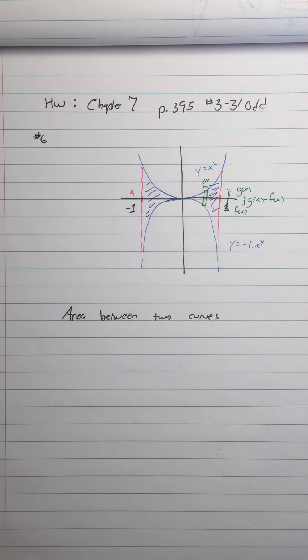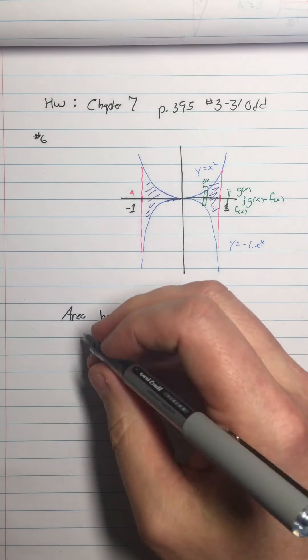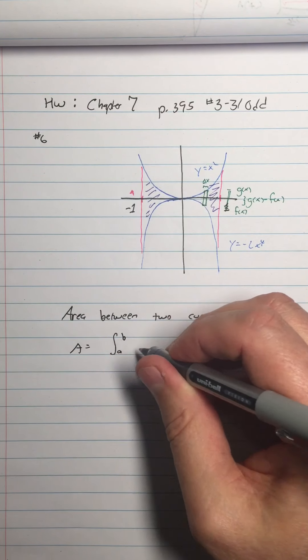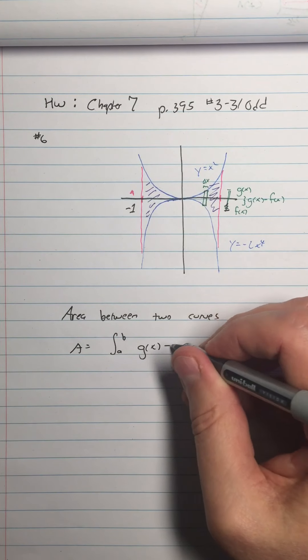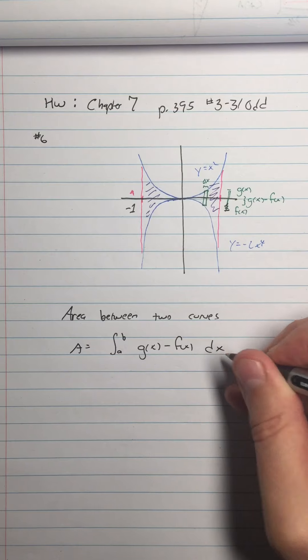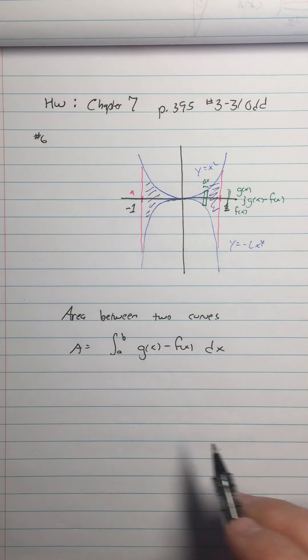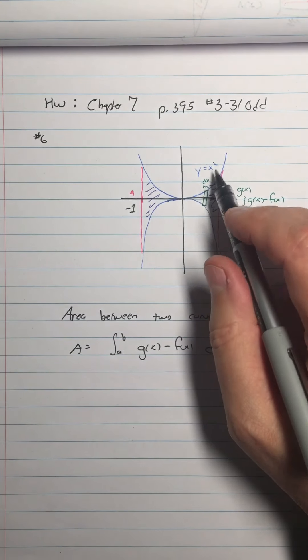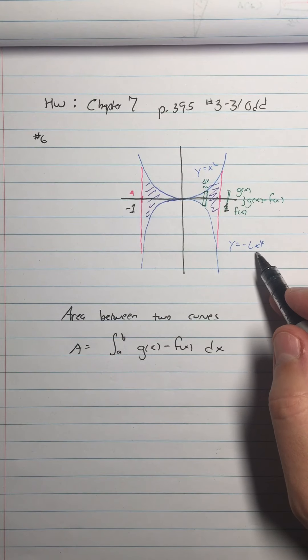So in general, when I'm looking at the area between two curves, the area is equal to the integral from a to b of g of x minus f of x dx. Alright, so if you want, see if you can apply this to our functions x squared and negative 2x to the fourth.